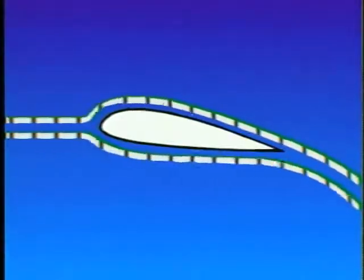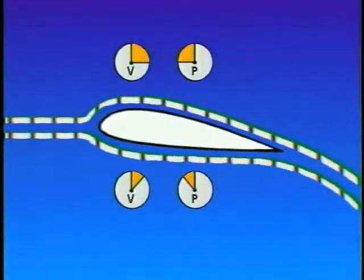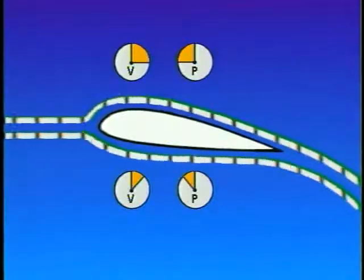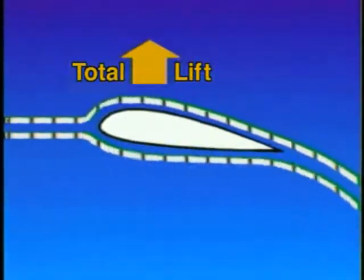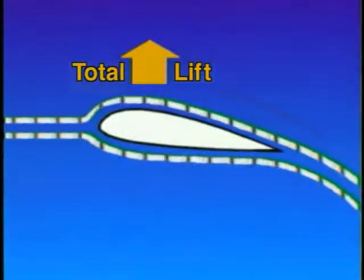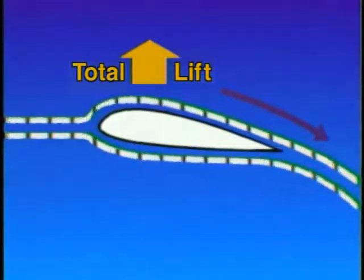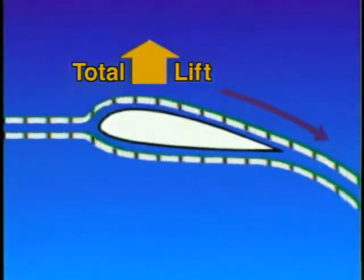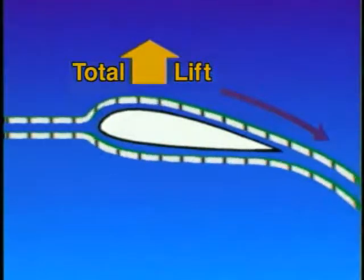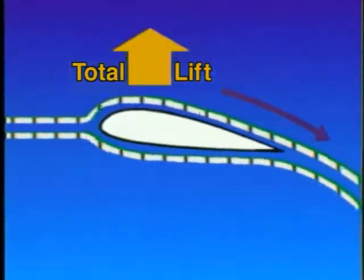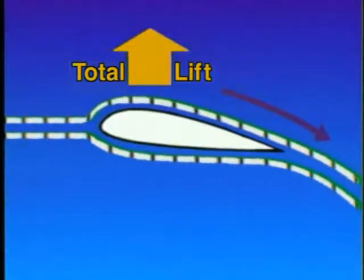As oncoming air meets the leading edge of the airfoil, it separates with part of the airflow going over the top and part going below. Since the air flowing over the top has farther to go, it must travel faster. The result is lower air pressure above the wing. This is a component of total lift. The remaining lift is provided by the downward-backward flow of air generated from the top surface of the wing. The lift provided by this flow can be explained by Newton's third law of motion, which states that for every action, there is an equal and opposite reaction. The reaction to this downwash results in an upward force on the wing and an increase in total lift.